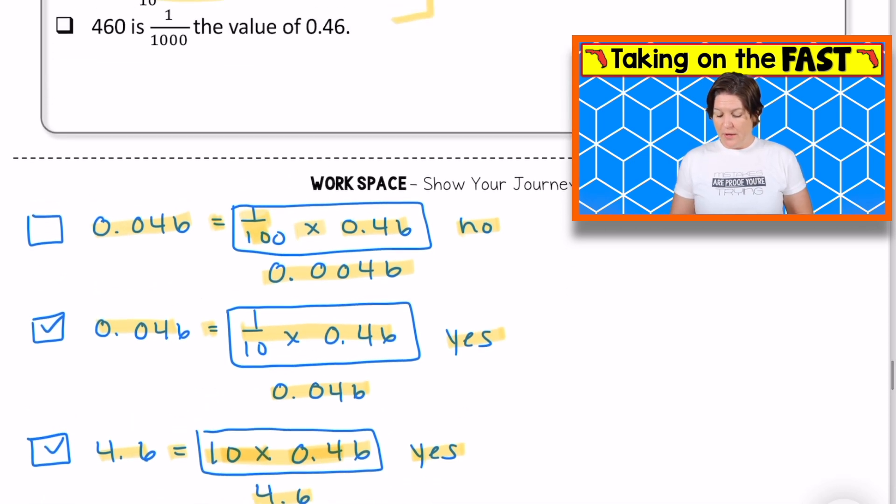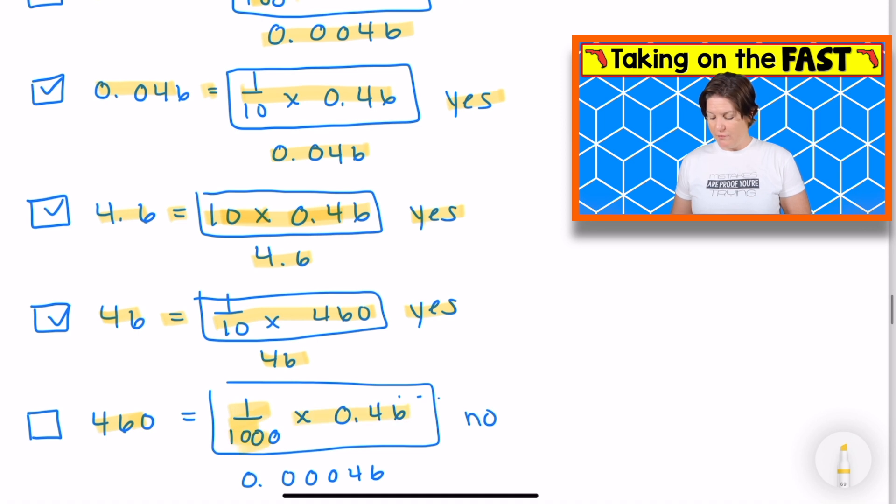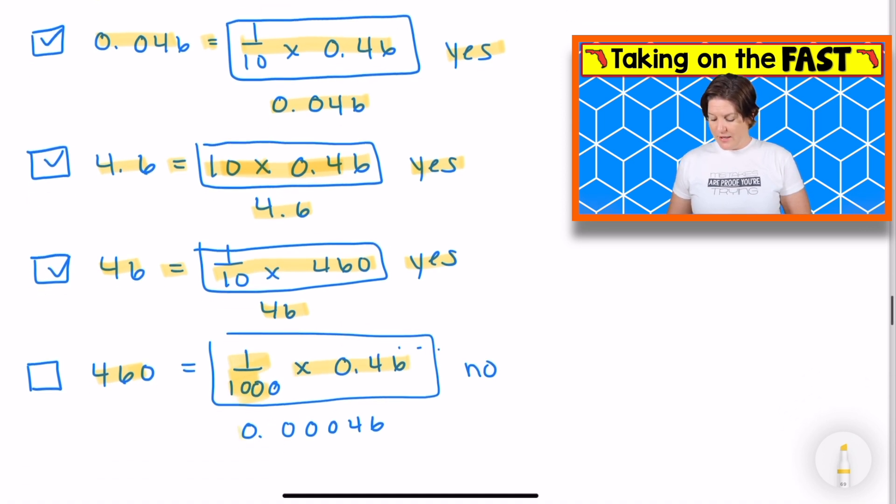And the last one, 460 is one thousandth the value of 0.46. 460 is one thousandth of 0.46. And that would be this number right here, creating a number that is one thousand times less. So no, that's not the right answer.